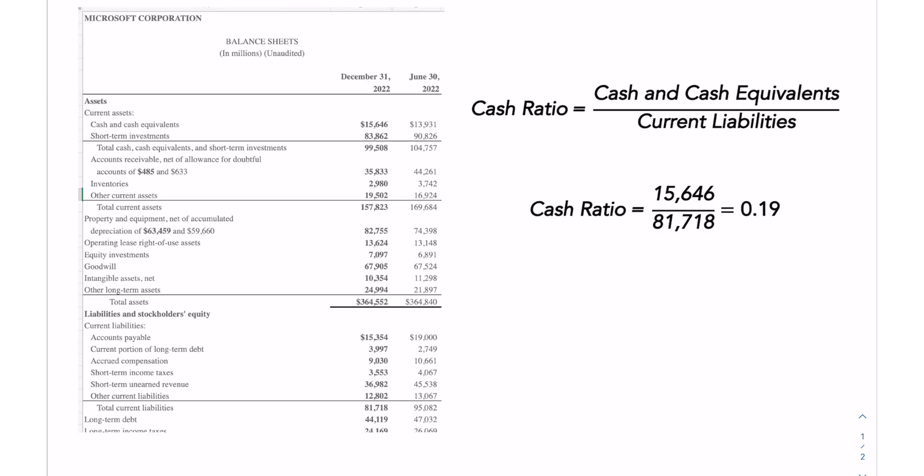Lastly, we have the strictest of the three ratios, and that is the cash ratio. This is strictly a ratio of the company's cash and cash equivalents to current liabilities. It measures, using the cash on hand today, how much of our current liabilities could we pay.